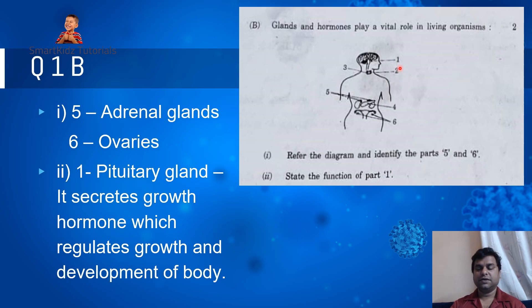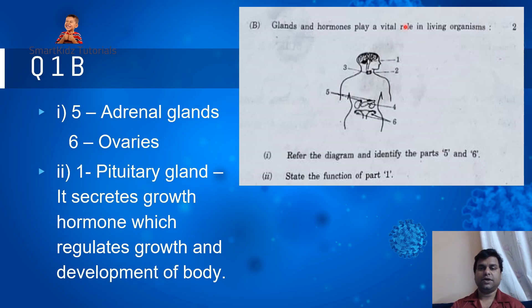The second part asked: state the function of part 1. Part 1 is the pituitary gland, and it secretes the growth hormone which regulates growth as well as development of the body.